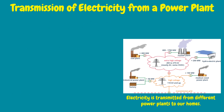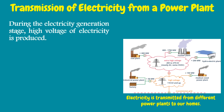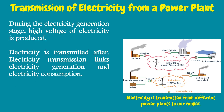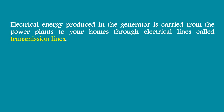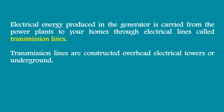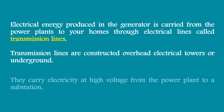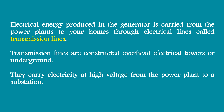Electrical power transmission involves the bulk movement of electrical energy from a generating site, such as a power station or power plant, to an electrical substation where voltage is transformed and distributed to consumers or other substations. Electrical energy produced in the generator is carried from the power plants to your homes through electrical lines called transmission lines. Transmission lines are constructed on overhead electrical towers or underground, and they carry electricity at high voltage from the power plant to a substation.